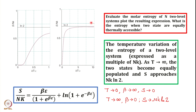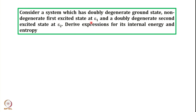At intermediate temperatures one can use this expression to calculate entropy. Now let us talk about another case. Consider a system which has a doubly degenerate ground state, a non-degenerate first excited state at E1, and a doubly degenerate second excited state at E2. Derive expressions for its internal energy and entropy.